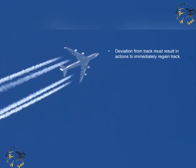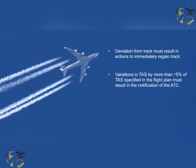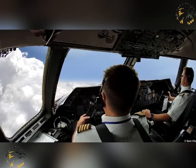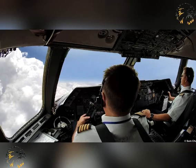Deviation from track must result in actions to immediately regain track. Variation in TAS by more than plus or minus 5% of the TAS specified in the flight plan must result in notification of the ATC. Changes in ETA that result in more than 3 minutes being added to arrival times at reporting points or FIR boundaries must be communicated to the ATC. Weather deterioration below VMC that prevents maintenance of a running flight plan clearance must result in requesting a new flight plan or following a new routing that allows accommodation of the new VFR flight conditions.